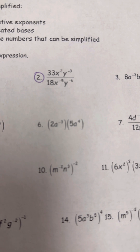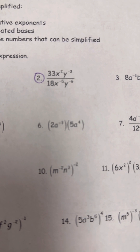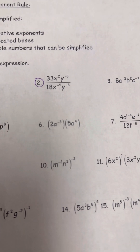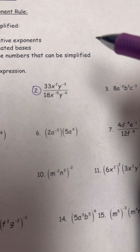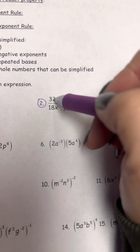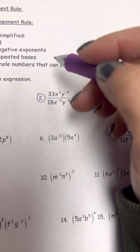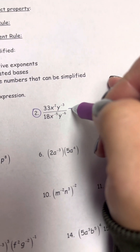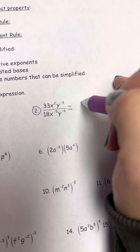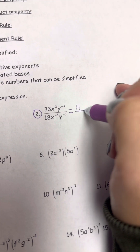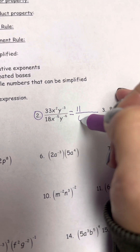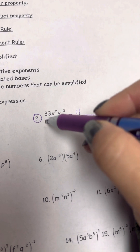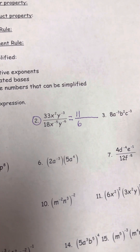I'll show you the way I do this. I'm going to start with 33 over 18, which can be reduced. Dividing by 3, I end up with 11 on top and 6 on the bottom. That takes care of reducing 33 over 18.